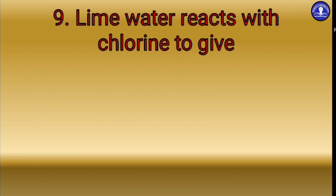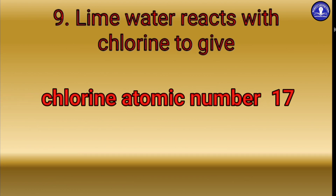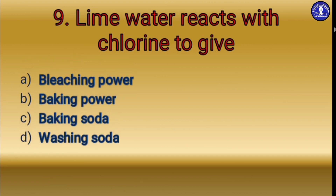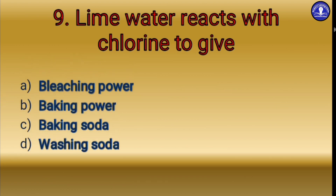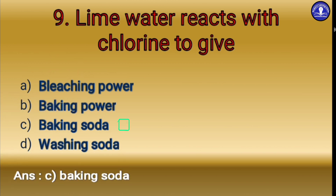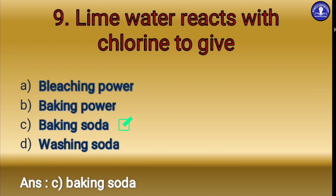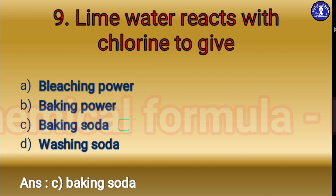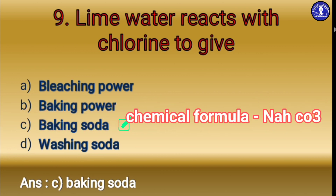The next question: lime water reacts with chlorine to give what? Chlorine has atomic number 17. The options are: option A bleaching powder, option B baking powder, option C baking soda, option D washing soda. The answer is bleaching powder, with chemical formula CaOCl2.